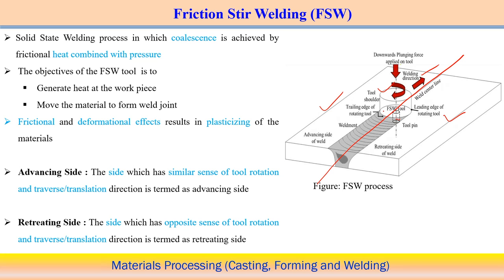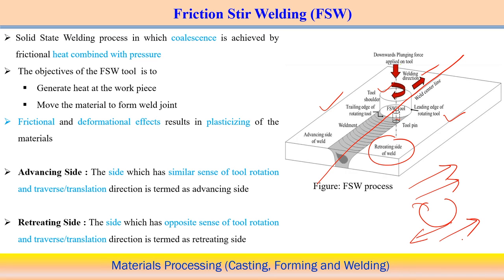In FSW, heat is generated both by the tool pin and by the tool shoulder in contact with the top surface. The advancing side is where the rotational velocity and welding direction are the same, while the retreating side has the weld moving in the opposite direction to rotation. The objective of the FSW tool is to generate heat at the workpiece and move material to form the joint — both frictional heat generation and deformation effects contribute to plasticization.